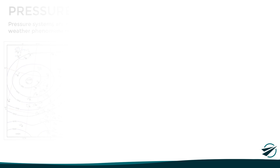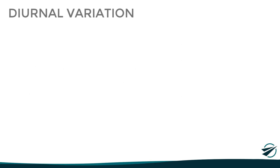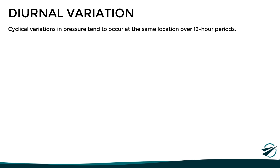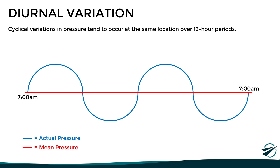Before finishing, we must look at one last concept: the diurnal pressure variation. In the same place, there tend to be cyclical variations of pressure in periods of 12 hours. These pressure changes show a relatively predictable pattern, with the highest pressure values found around 10 a.m. in the morning and 10 p.m. in the evening, while the lowest pressure tends to be found around 4 a.m. in the morning and 4 p.m. in the afternoon.